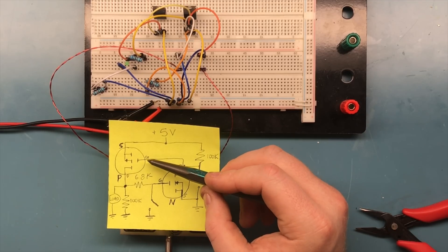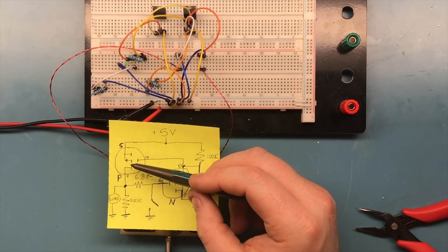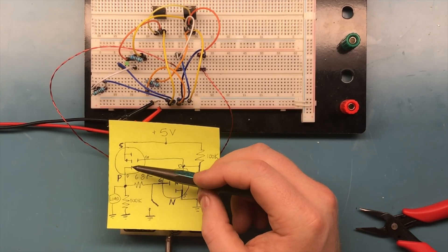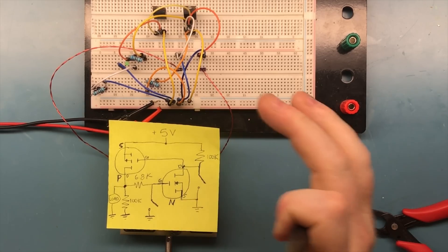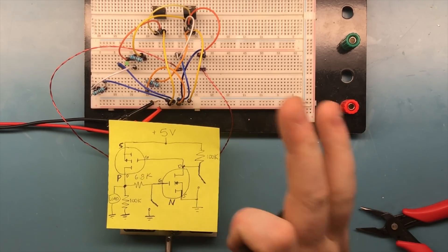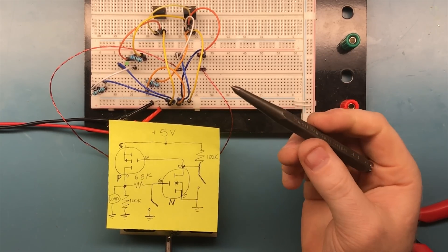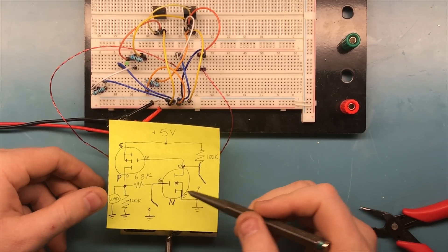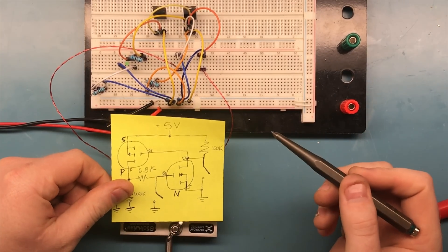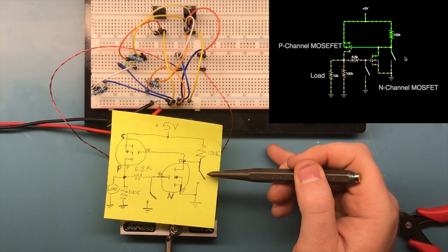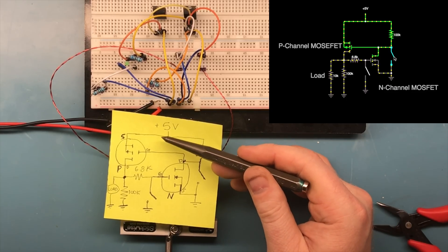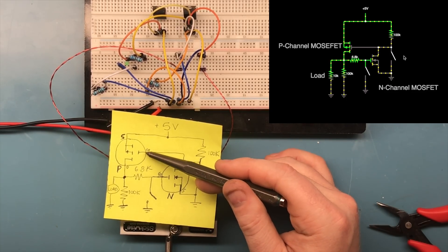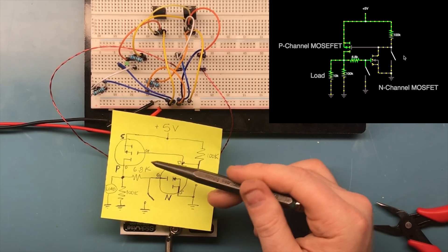When the gate is driven low, it turns on. When the gate is high, it remains off. Right when you put the circuit together, this is off - there's no current flowing at all. This is your on switch, this is your off switch. I've replaced these switches with reed switches. When you introduce the magnet to this reed switch, you're basically dropping the gate of the p-channel low.